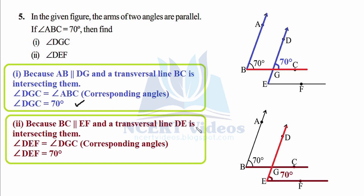For angle DEF: BC is parallel to EF, and ED acts as a transversal. Visualize an inverted and tilted F-shape. Using corresponding angles again, angle DEF equals 70°. In this way you can find answers for various geometrical figures by identifying the correct parallel lines and transversals.